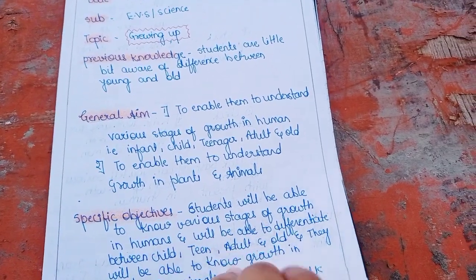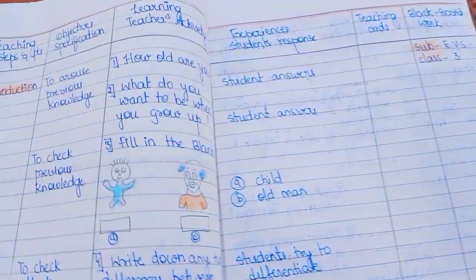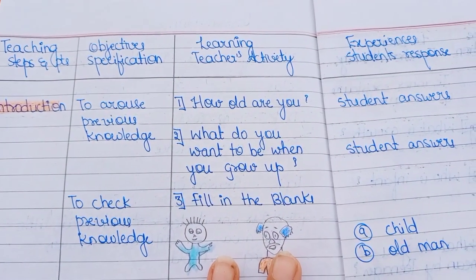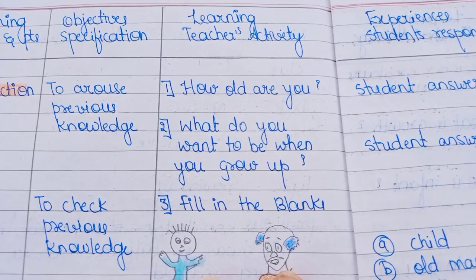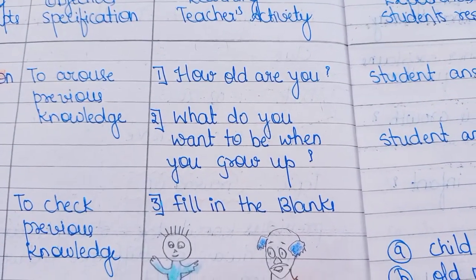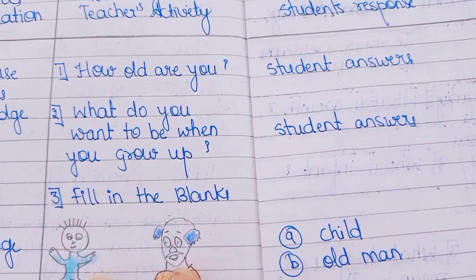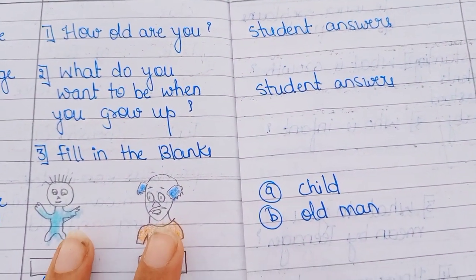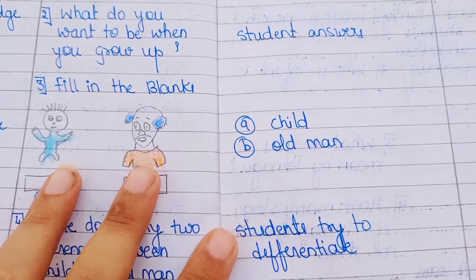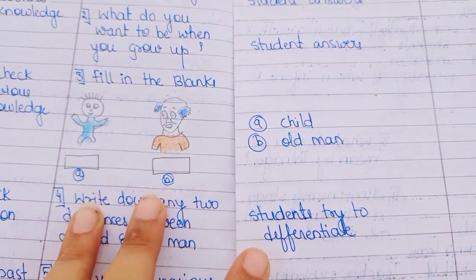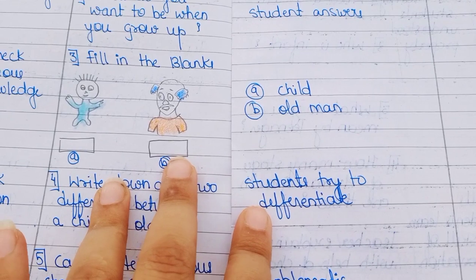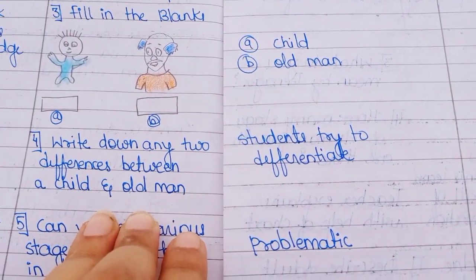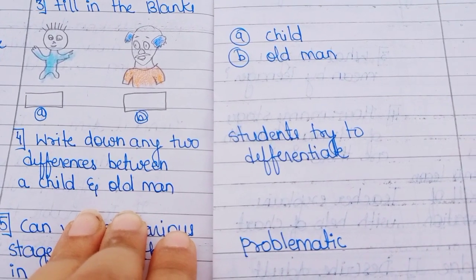Now let's turn the page and see the important Introduction part. Here we have to ask: 'How old are you?' — students will answer. Second question: 'What do you want to be when you grow up?' — students will answer. Third, we draw a fill-in-the-blank activity where students answer 'child' and 'old man.' Then we ask students to write down two differences between a child and an old man, and they answer in their own words.